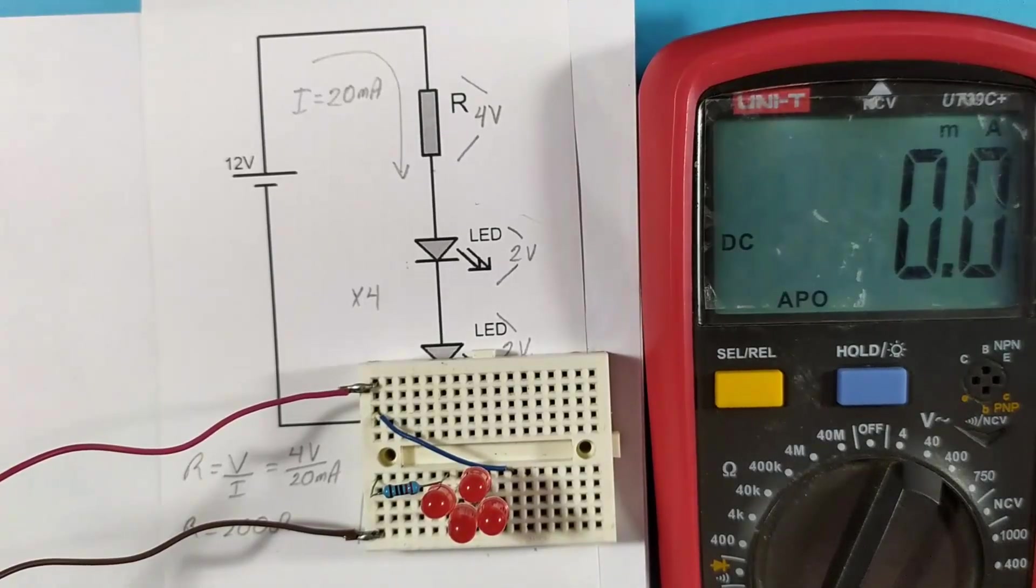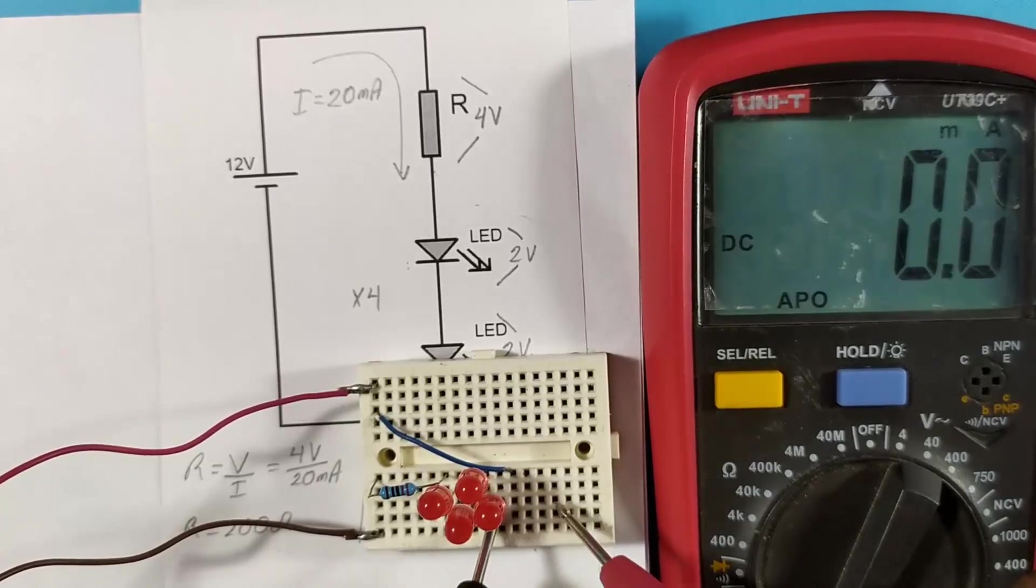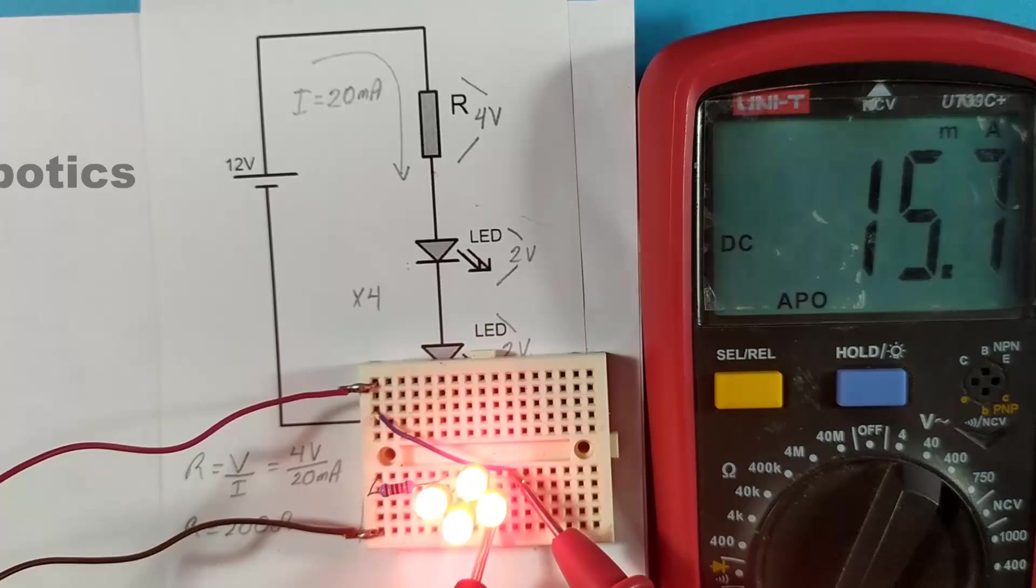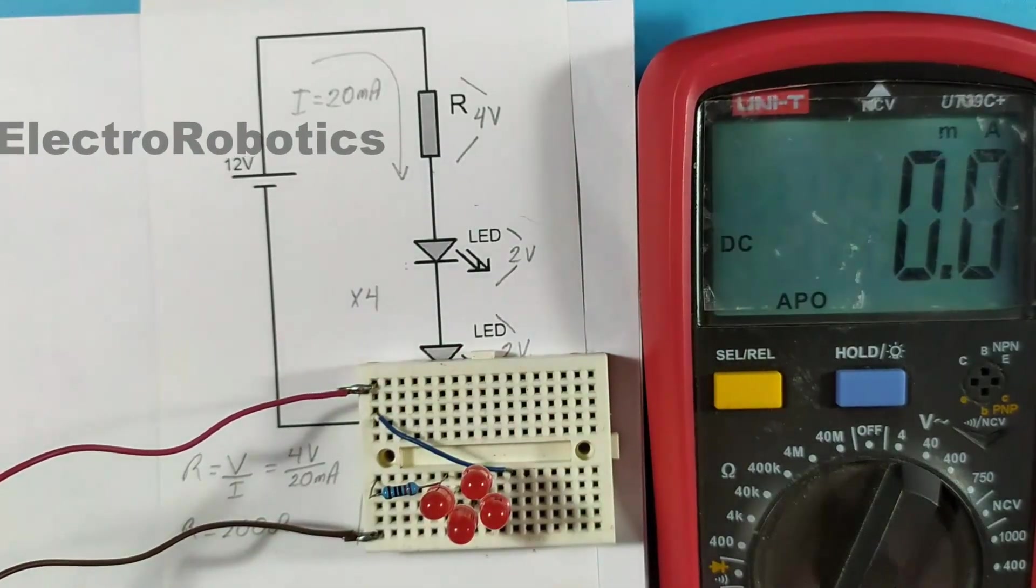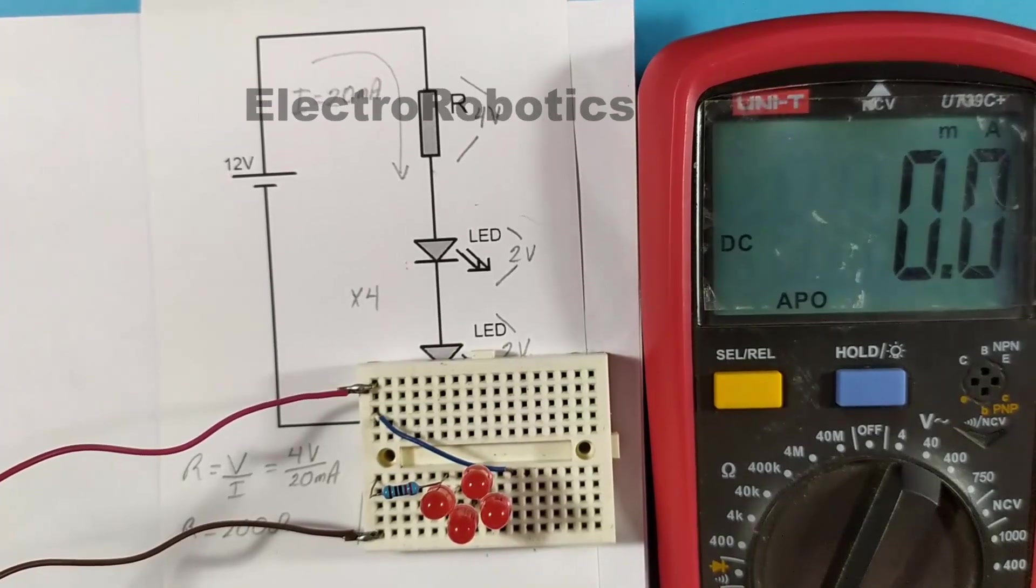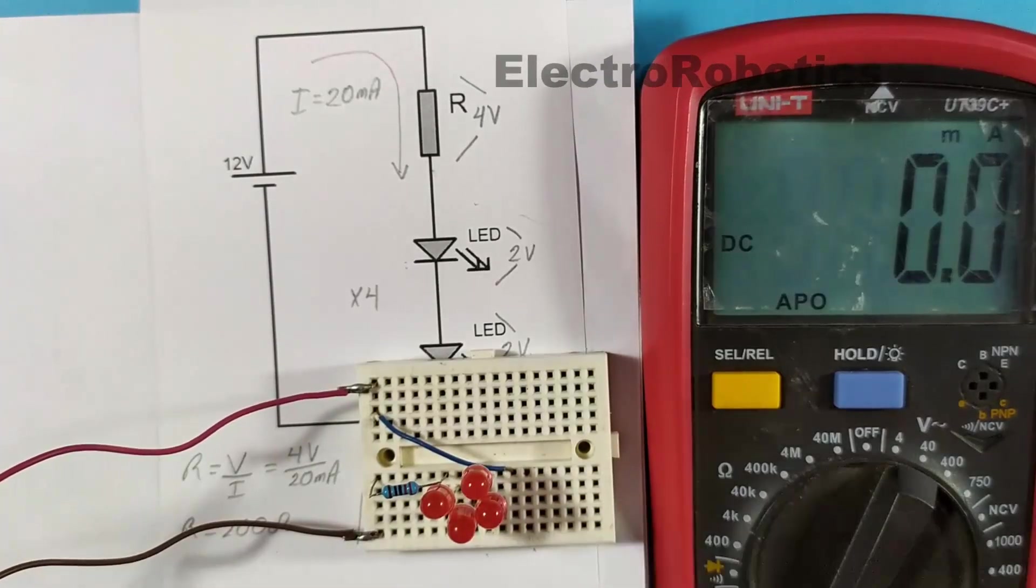Very well. Now let's measure the current of the series circuit in which we should have an approximate of 20 milliamps. And there we have 15.5 milliamps, which is an approximation since the resistance I have is 220 ohms and not 200 ohms as is being used in the formula, but it is quite close. And we can see that all the LEDs light up very well.